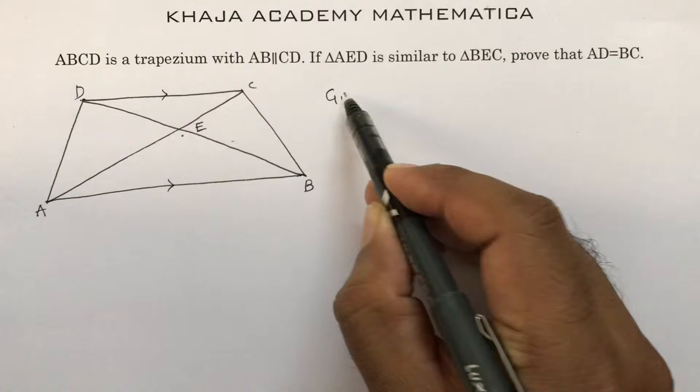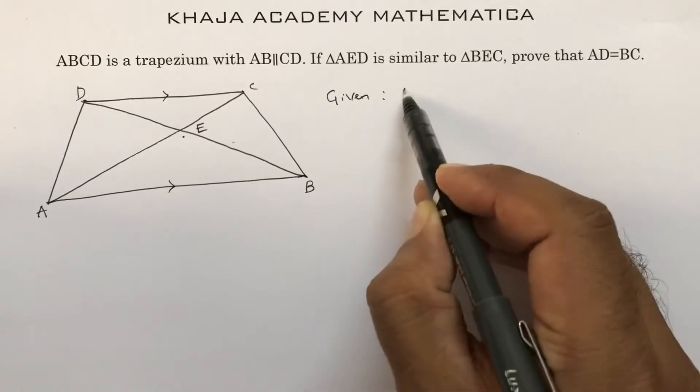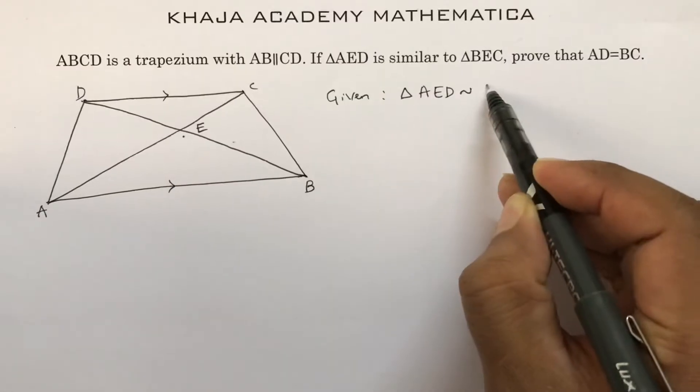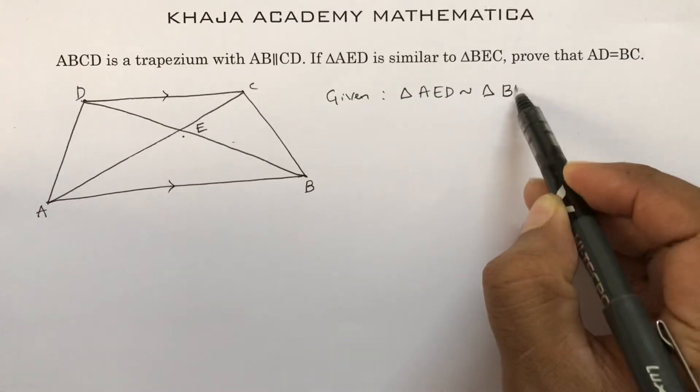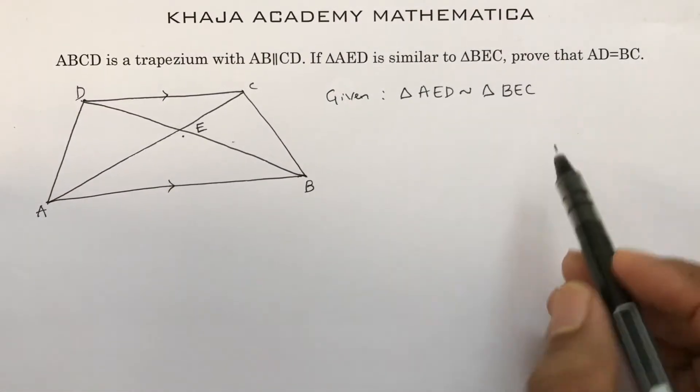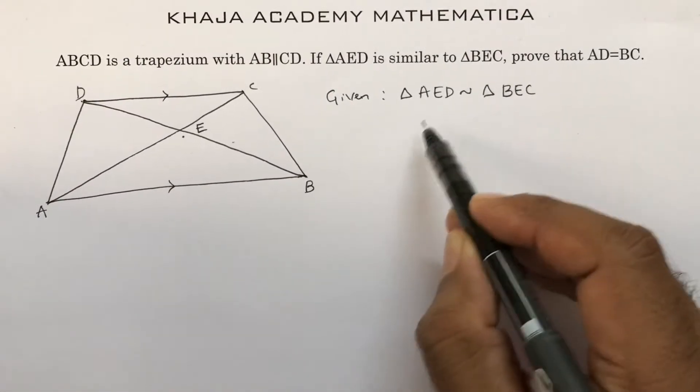So given here, triangle AED is similar to triangle BEC. If the triangles are similar, corresponding angles are equal and sides are proportional.